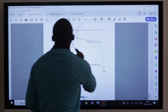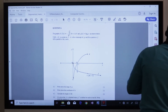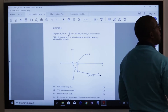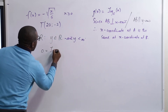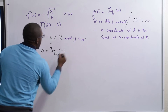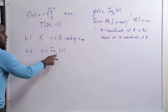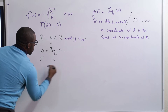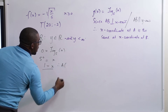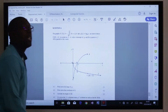Question 6.2: calculate the coordinates of A. A is the X intercept of G, which means Y equals 0. So 0 equals log to the base of 5 of X. Convert from log notation to exponential notation: 5 to the power 0 equals X, giving X equals 1. Since at the X intercept Y is 0, the coordinates of A are 1 and 0.